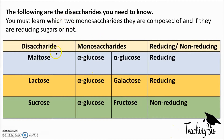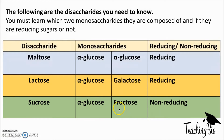You need to know how to form each of the disaccharides. Alpha glucose and alpha glucose form maltose, which is a reducing sugar. Alpha glucose and galactose form lactose, which is also reducing - notice 'lact' in lactose and galactose. Alpha glucose and fructose form sucrose - a way to remember this is that fruit is sweet, so fructose makes sucrose - and sucrose is a non-reducing sugar, tested using the acid hydrolysis test discussed earlier.